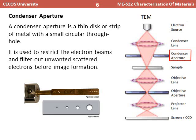Next comes the condenser aperture, which is a thin strip with small circular holes of various sizes. The purpose of the condenser aperture is to restrict the electron beam and filter out unwanted scattered electrons before image formation or before the beam passes through the sample.